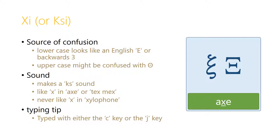The letter Xi, sometimes spelled XI and sometimes KSI, looks in the lowercase like an English E or even a backwards 3, and the uppercase might be confused with an uppercase letter Theta. But the sound is a combination KS sound, sort of like the X in the English words 'axe' or in 'Tex-Mex.' It never makes a Zed sound like the X in 'xylophone.' To type this letter, depending on your operating system, you sometimes type it with the C key and sometimes with the J key.